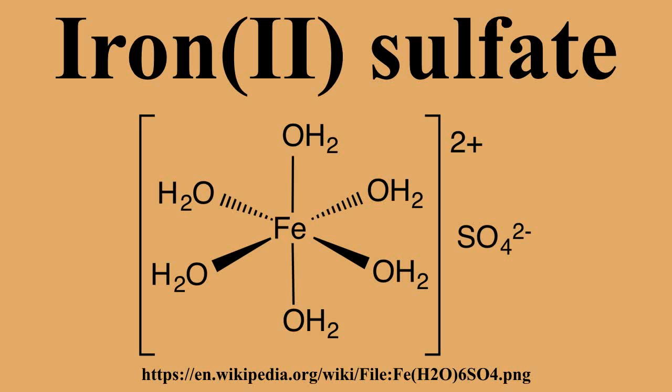6FeSO₄ + 3Cl₂ → Fe₂(SO₄)₃ + 2FeCl₃. Upon exposure to air, it oxidizes to form a corrosive brown-yellow coating of basic ferric sulfate, which is an adduct of ferric oxide and ferric sulfate: 12FeSO₄ + 3O₂ → 4Fe₂O₃ + 2Fe₂(SO₄)₃.